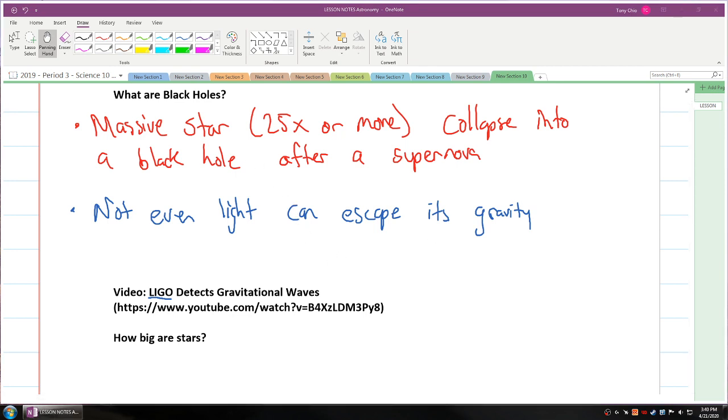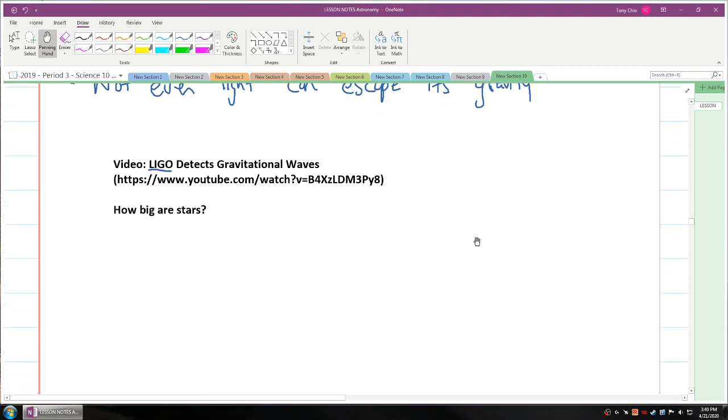Now what we're going to talk about is how big stars are and how we classify stars. Imagine this: the sun equals a volleyball. Our sun is the size of a volleyball which is about 26 centimeters across. Well, there's a star in our galaxy called Arcturus. And this star would be approximately 6.5 meters across, about the size of a truck.